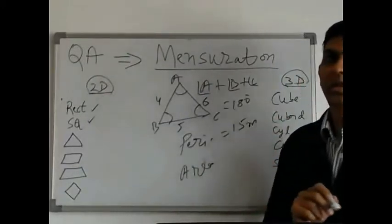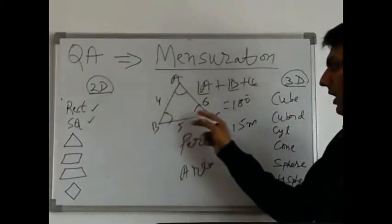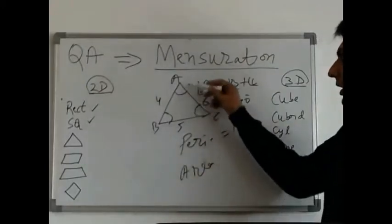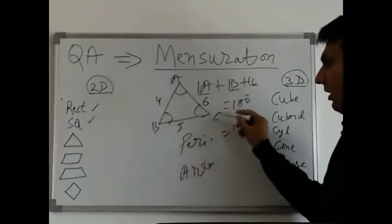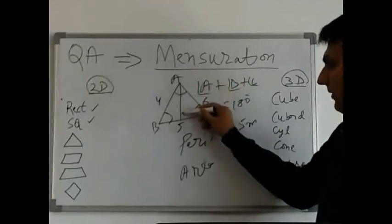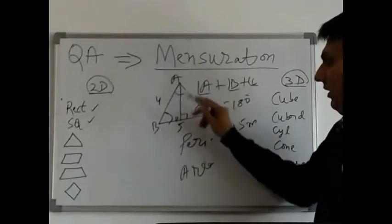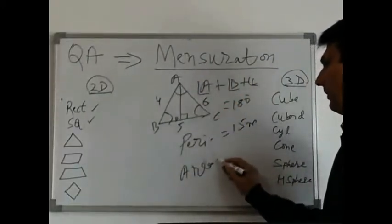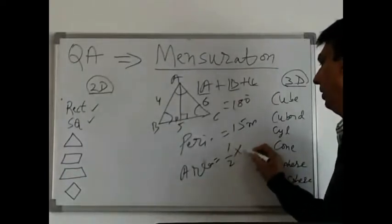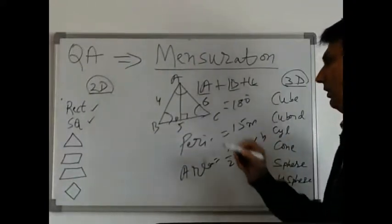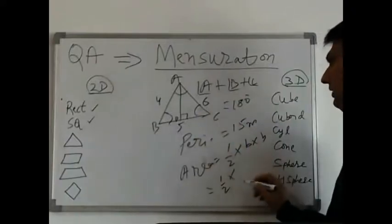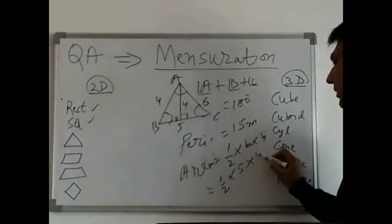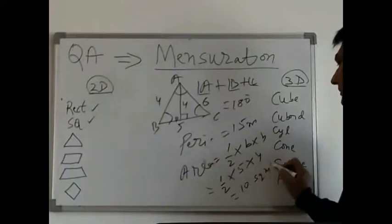There are two formulas for the area of a triangle. It depends on whether the lengths of three sides are given or we are given an altitude. An altitude is a perpendicular drop from a vertex to the opposite base. If I consider BC as the base and drop a perpendicular from A naming it D, then AD is the altitude or height of this triangle. In that case, area of a triangle is half into base into height. Here it becomes half into 5 into 4, which gives 10 square meters.